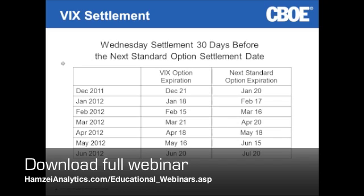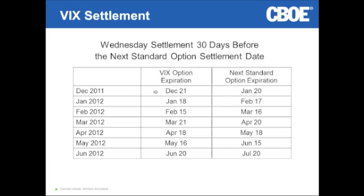December 21st is the next VIX option and futures expiration date. The next standard option expiration would be 30 days from then — January 20th. The January S&P 500 index options, the standard third-Friday-of-the-month SPX options, are the options that will be used to price settlement on December 21st. The VIX is 30-day implied volatility, so 30-day options are used to come up with the settlement price.